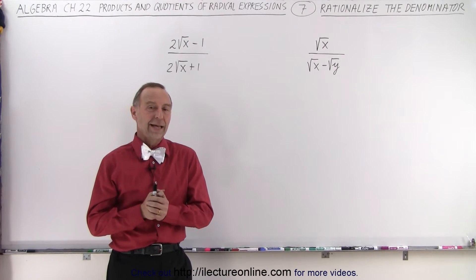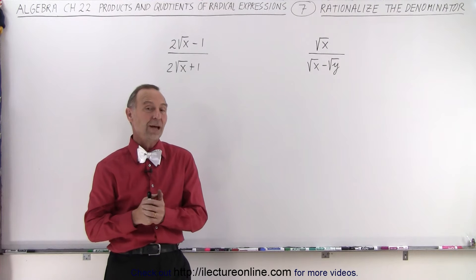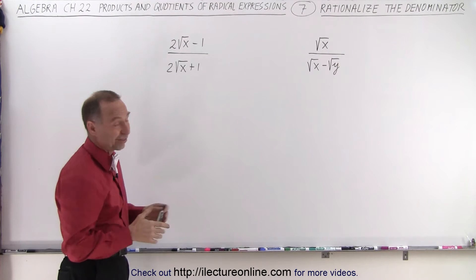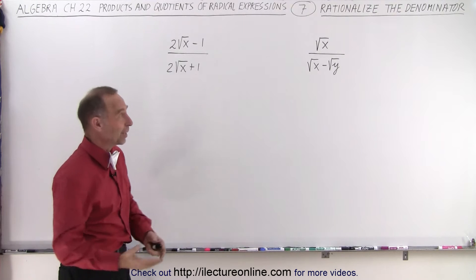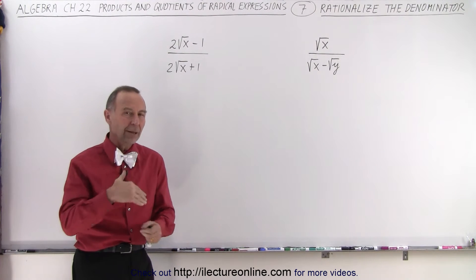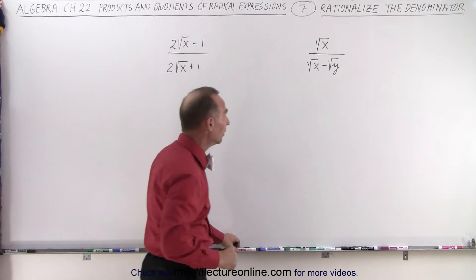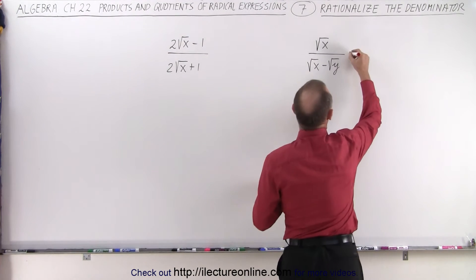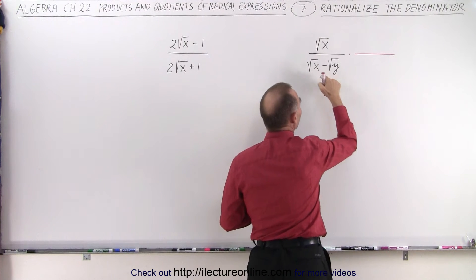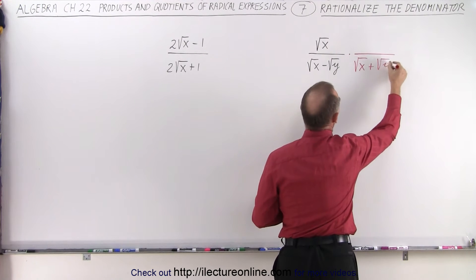Welcome to our lecture online. We're trying to rationalize these denominators to get rid of those square roots in the denominator — that's essentially what rationalize the denominator means. We're doing that by multiplying both the numerator and the denominator by the conjugate of the denominator. So we're going to multiply both by this, but instead of a negative, we write a positive: the square root of x plus the square root of y.